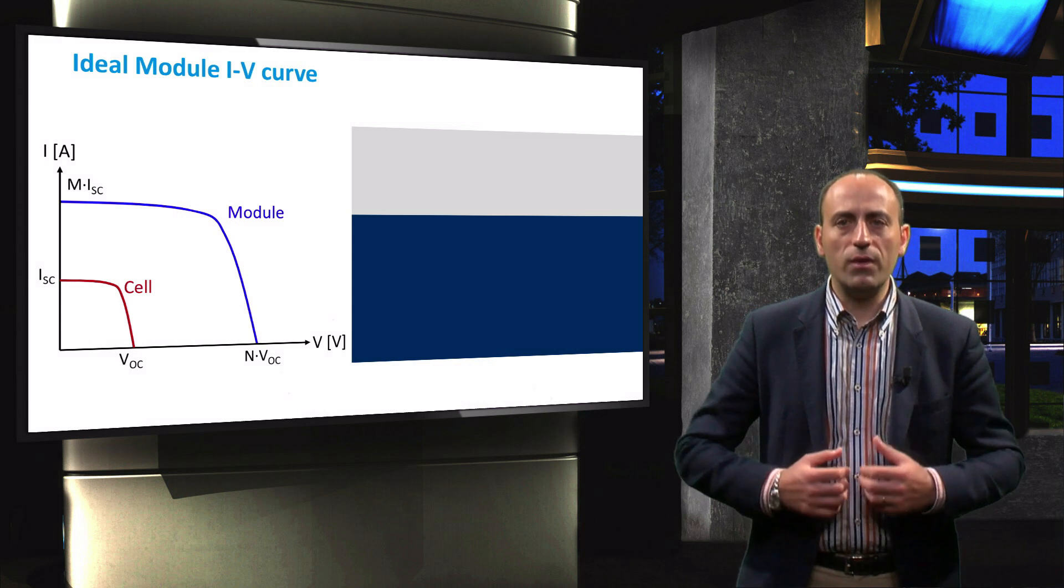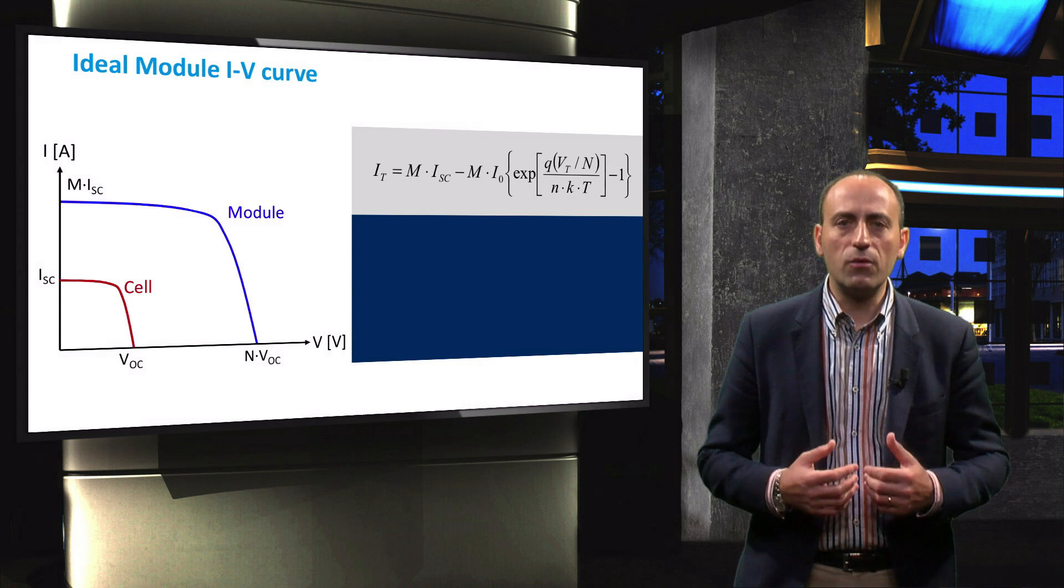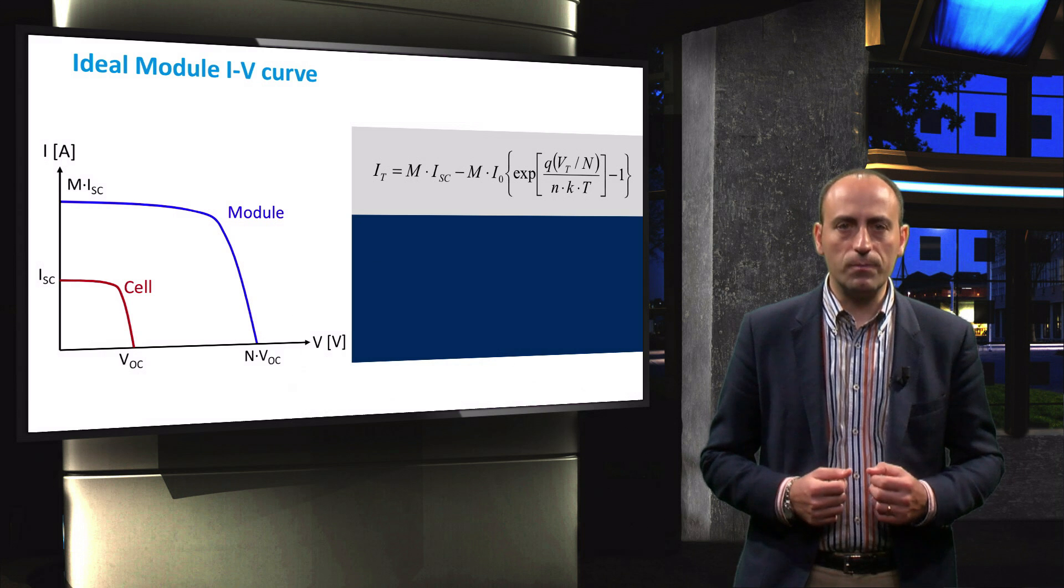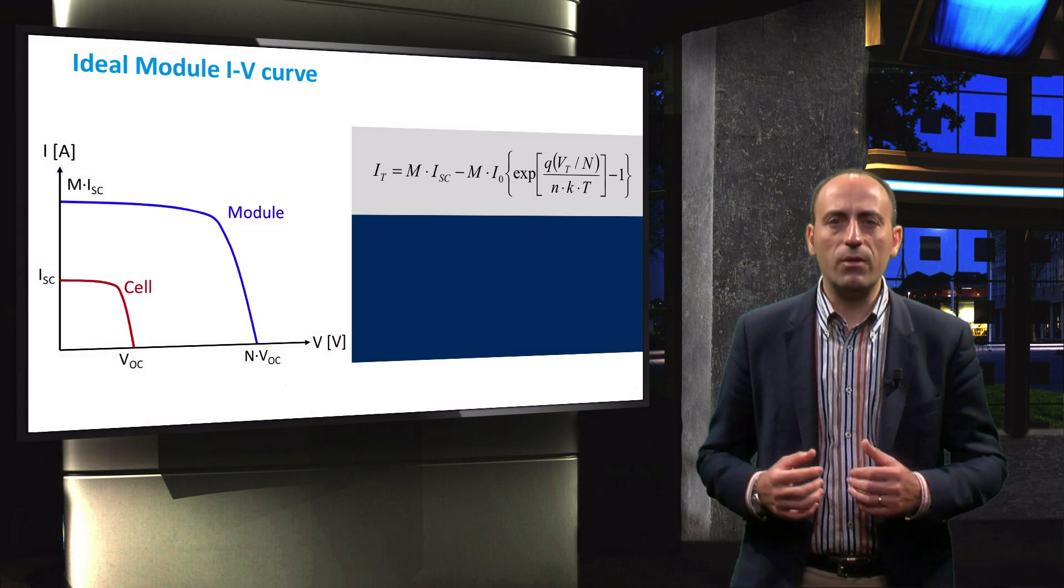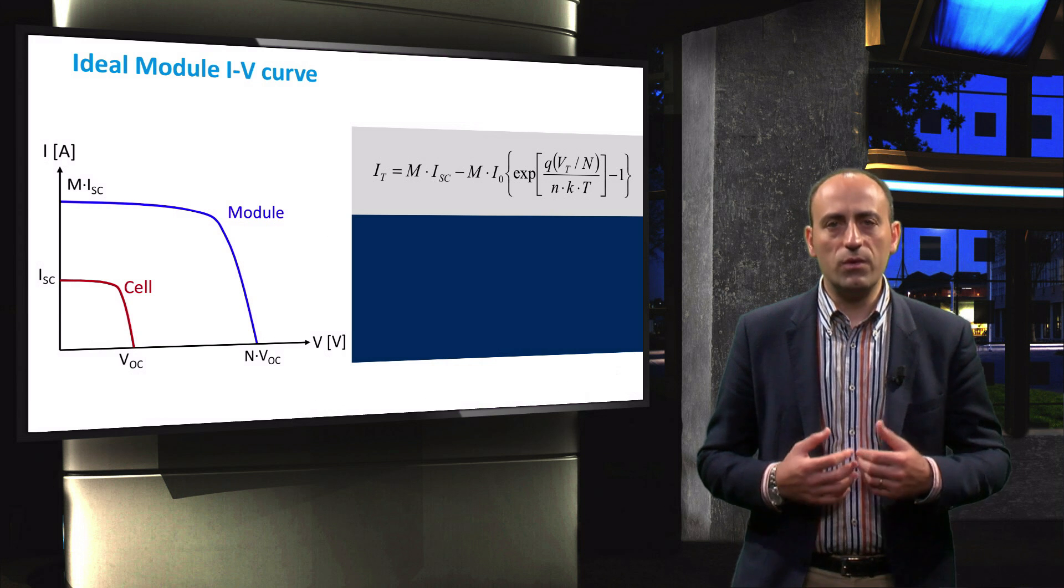The IV relation of an ideal module is described by this equation, which is derived from the illuminated diode equation. The voltage and current of the module are indicated by IT and VT respectively.